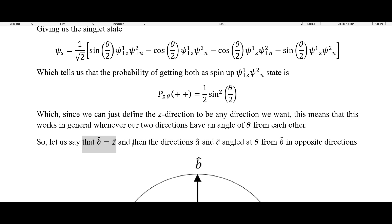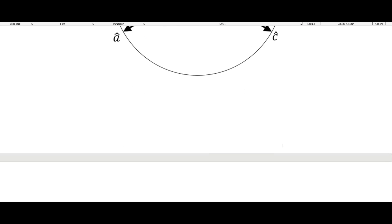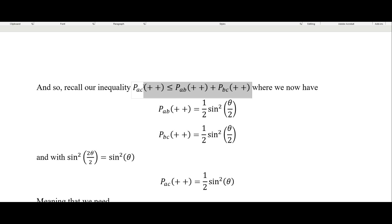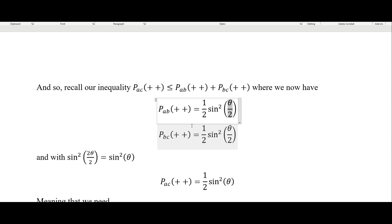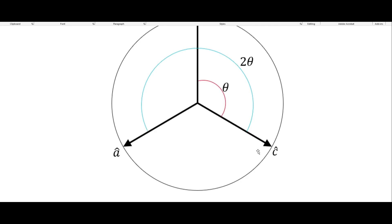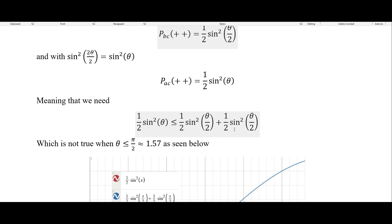So let's say that B is in the Z direction. Then the directions of A and C are angled theta from B in opposite directions. So this is our B direction, C is some angle theta from that, and A is some angle negative theta from that, meaning A and C are two theta from each other. Recalling our inequality, AB being both plus-plus corresponds to angle theta, B to C is also angle theta, and A to C is now two theta. The two's cancel out, and we get our inequality, where the AC term has the two-theta angle, and the AB and BC terms each have the theta-over-two angle.